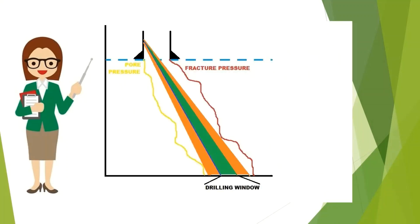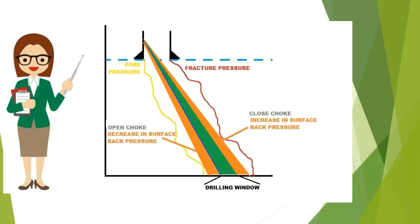The main advantages of managed pressure drilling are to drill with minimal overbalanced pressure, reduce mud densities to control the wellbore, and minimize formation damage while allowing precise control of the wellbore. MPD reduces the original drilling window to a precision, leaving room for pressure adjustments even to a minuscule level. Much similar to a choke adjustment in a kill-well situation, managed pressure drilling uses chokes to precisely control the drilling window. Opening the choke decreases surface back pressure, and vice versa.